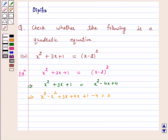Now, on cancelling the terms, we get 7x minus 3 equals 0.